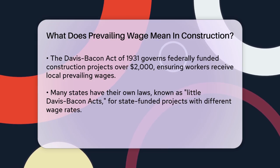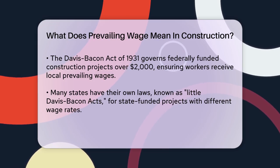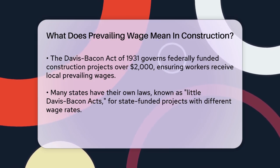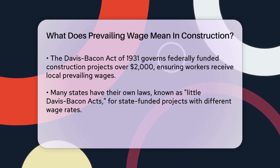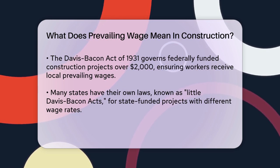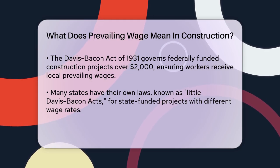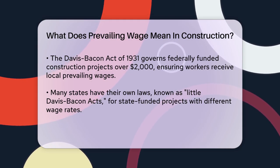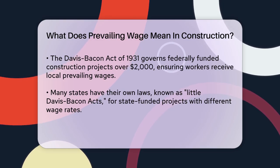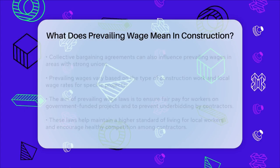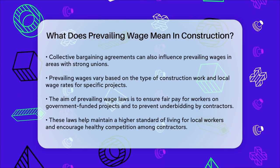In addition to federal and state determinations, prevailing wages can also be based on collective bargaining agreements, CBAs, in areas with strong union presence. For residential construction, heavy and highway construction, and other specialized projects, the prevailing wages are determined based on the specific type of work and the local wage rates for those projects.